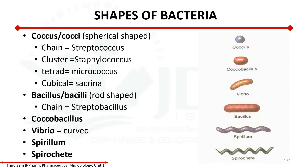Coccus is the singular form and cocci is the plural form — there can be some confusion there. Bacillus is a rod shape. When you have a coccus, it is a round shape, whereas bacillus is a rod shape. This is a coccus.